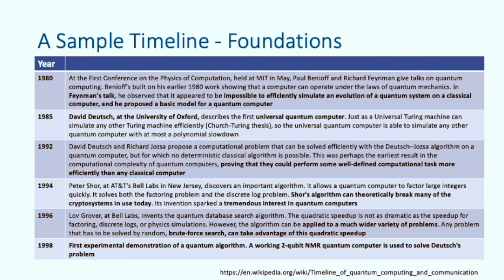In 1994 Peter Shor proposes an algorithm that can theoretically break many of the cryptosystems in use today. Its invention sparked tremendous interest in quantum computing. In 1998 we then see the first experimental demonstration of a quantum algorithm running on a real quantum computer, solving the Deutsch algorithm with just two qubits.